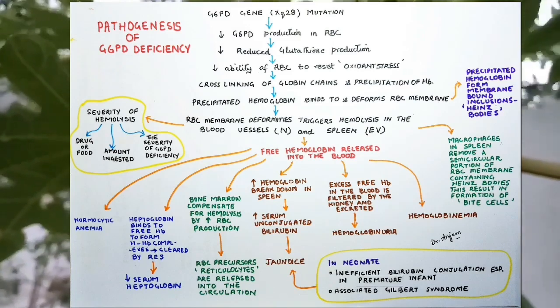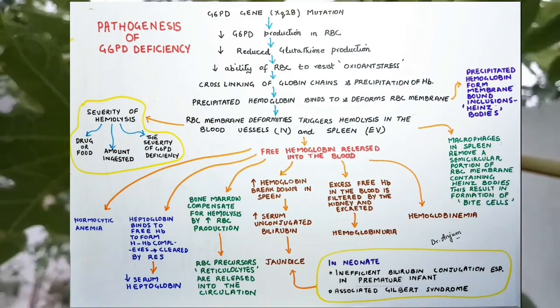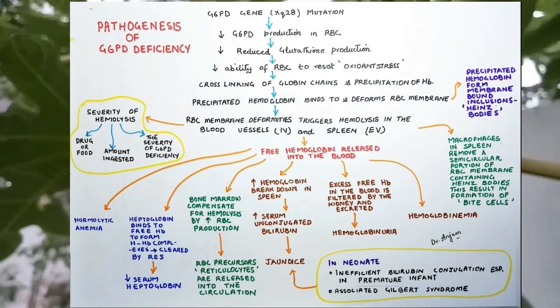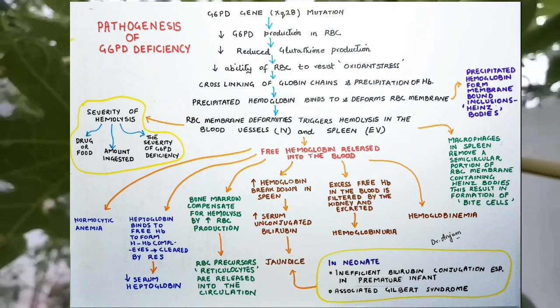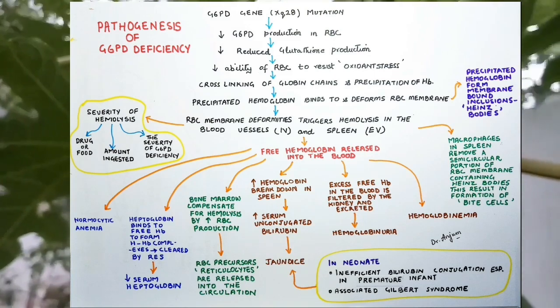The bone marrow compensates for hemolysis by increasing RBC production, resulting in increased reticulocytes in circulation. Free hemoglobin is broken down to unconjugated bilirubin, resulting in jaundice. The excess free hemoglobin in the blood is filtered by the kidney and excreted, resulting in hemoglobinuria. In neonates, inefficient bilirubin conjugation, especially in premature infants, or if there is associated Gilbert syndrome, also contributes to jaundice.